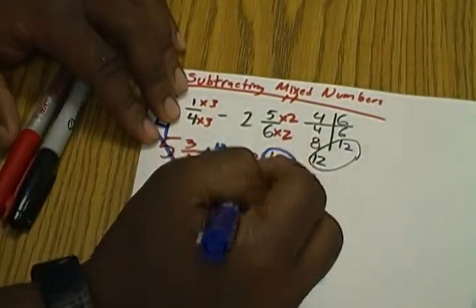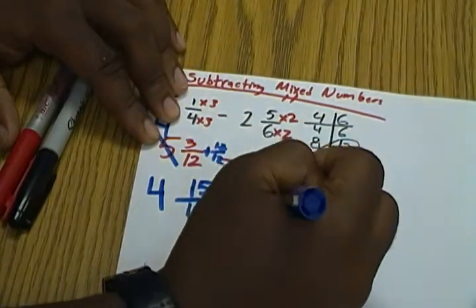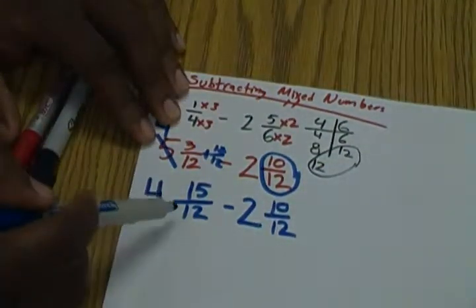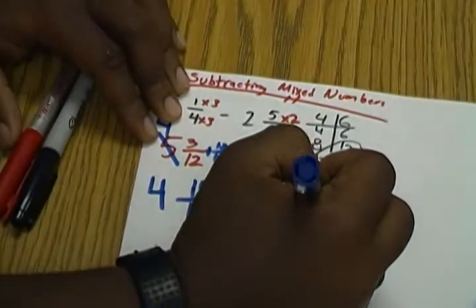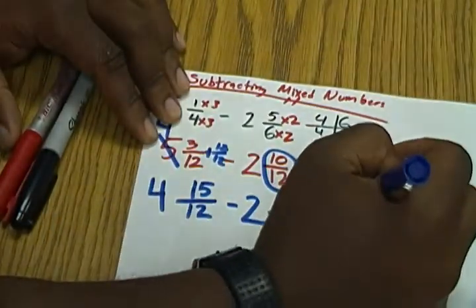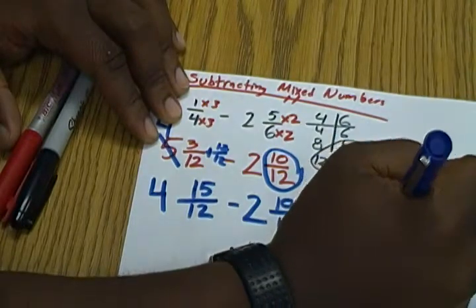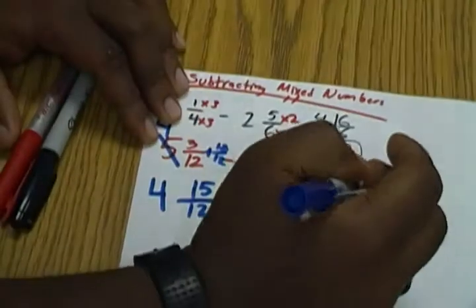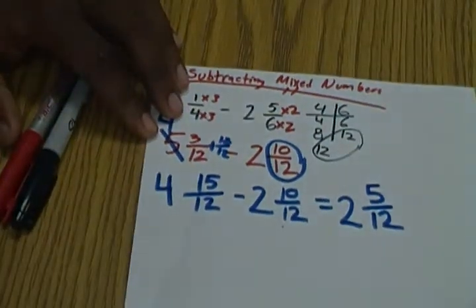So now we're going to rewrite our problem again in blue with these few changes that we already did. So now we have 15/12 and 10/12. We know 15 minus 10 equals 5. So we're going to put 5/12 here. And then we have 4 minus 2 which equals 2. So our answer is 2 5/12.